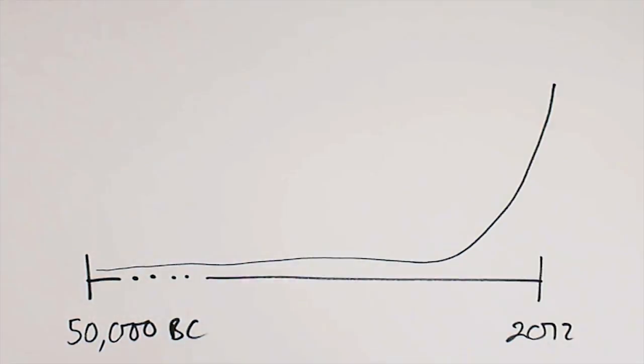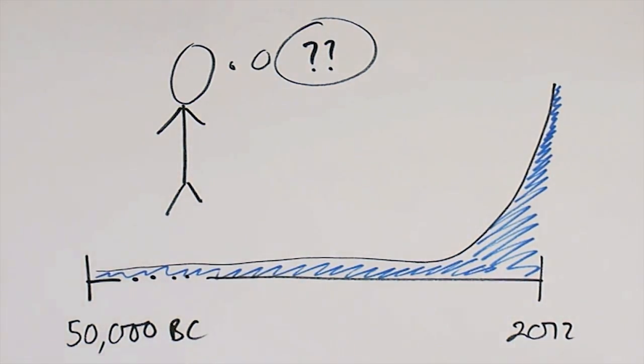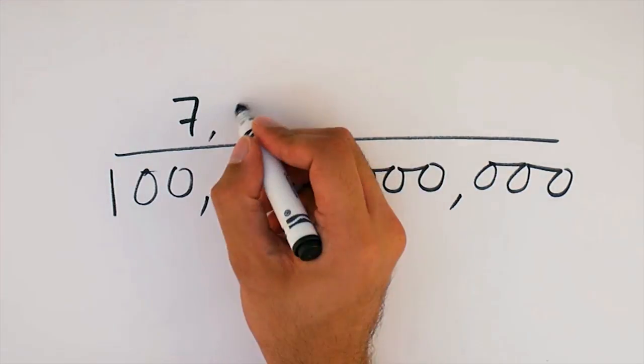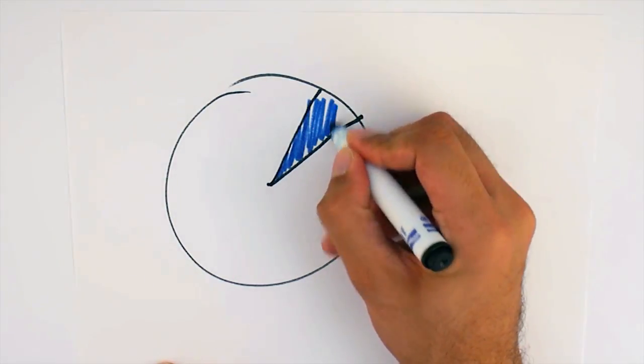Here's a question. How many humans have ever lived? What's the total number of people who've ever been born? The answer is about 100 billion, and right now there are 7 billion people alive on Earth. That means 7% of the people who've ever lived are alive today.